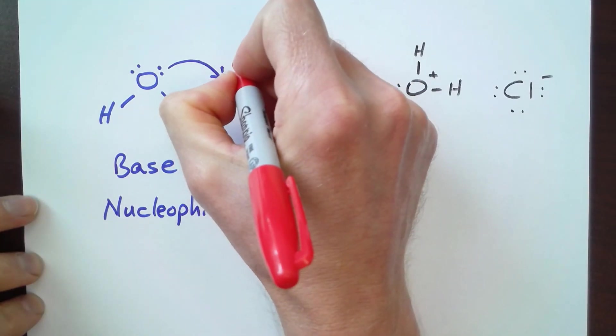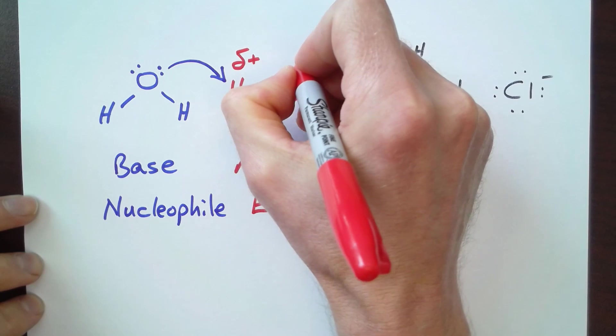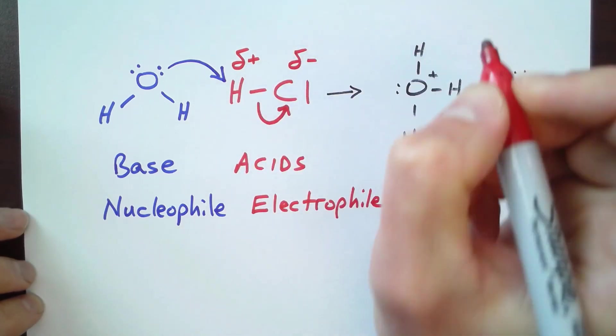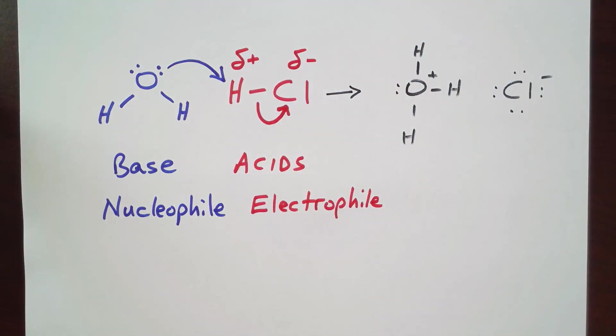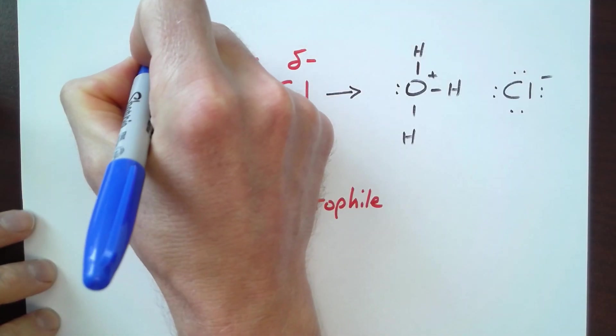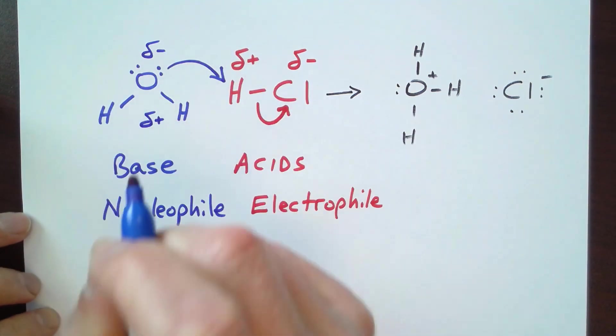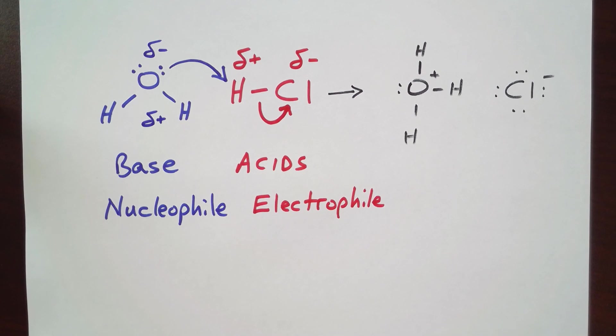And if we just think about HCl, we know that the hydrogen has a positive charge, and then chlorine has a negative charge, or a partial negative charge. With water, we know that the oxygen has a partial negative charge, and the hydrogens have a partial positive charge.